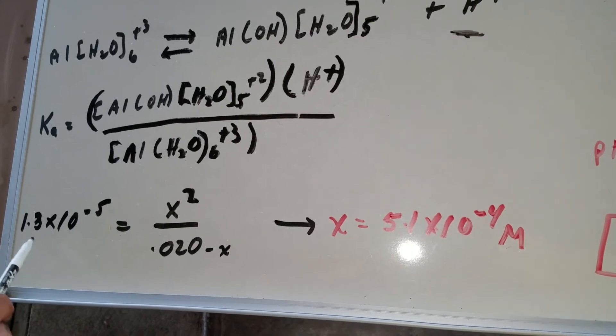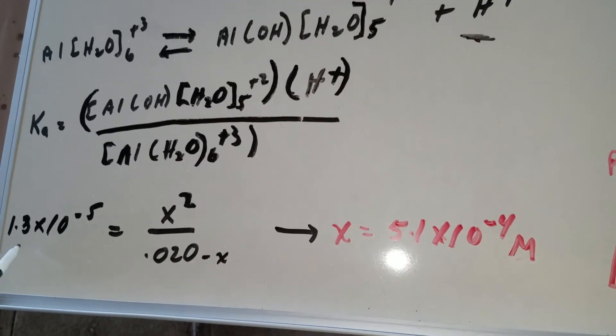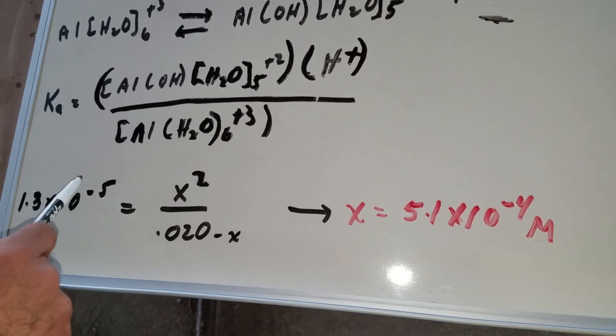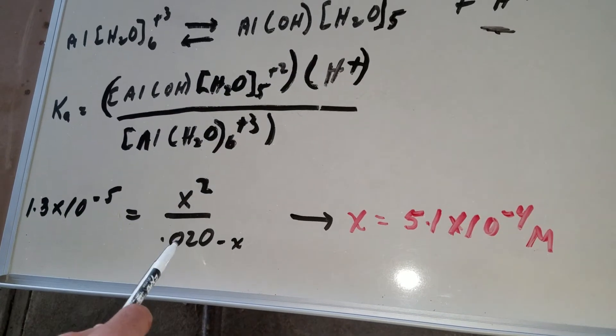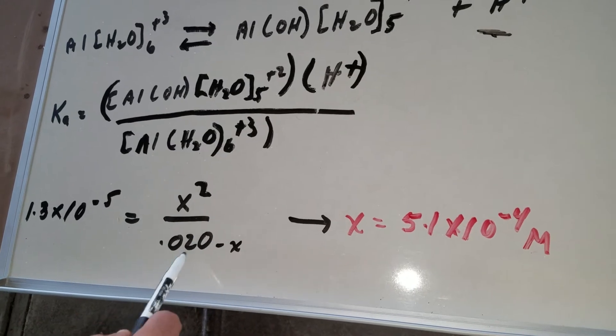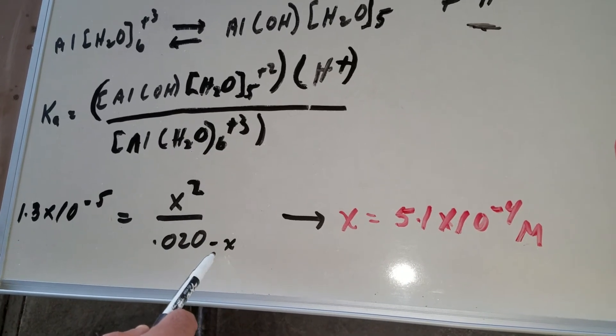So all we're going to do now is simply write the Ka as the products divided by the reactants. Plug in, chug. The Ka is given as 1.3 times 10 to the minus five. You don't know either one of these products, so call them both X. The denominator is what's left over, 0.020 minus X.